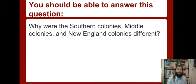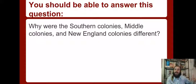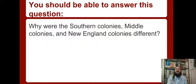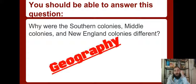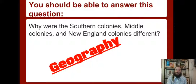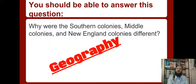So colonial regions - you should be able to answer this question: why were the southern colonies, middle colonies, and New England colonies different? Most importantly, their economies - how they made money - why were they different? The answer, and this should be a review, is geography. The way the land is set up. If you're not by water, you can't make money fishing. If you have bad soil that can't grow crops, then you're not going to make money farming. The way the land and the weather is will determine how you make your money, what economic activities you use.